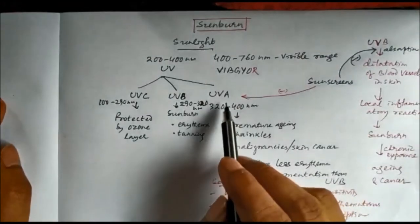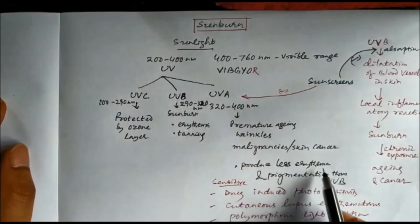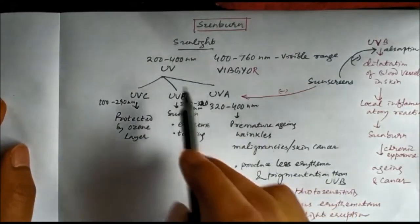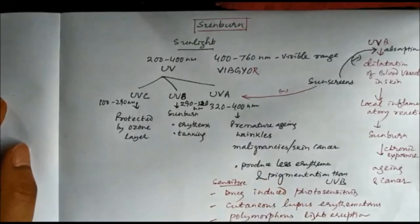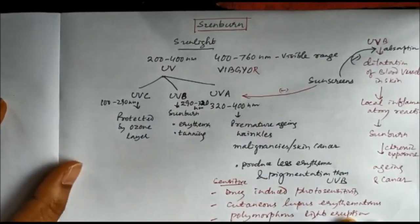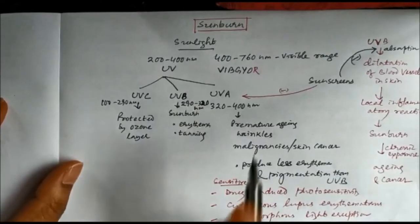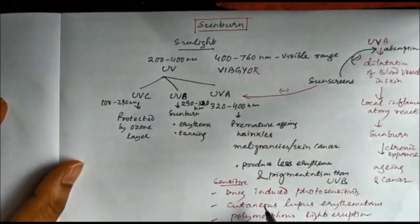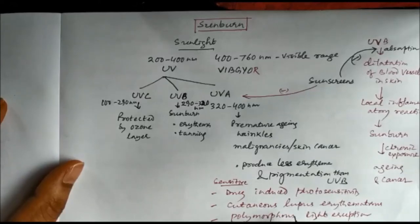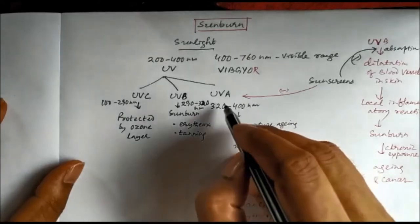Comparing UVA and UVB, there is less erythema and pigmentation with UVA compared to UVB. However, certain patients are sensitive to UVA: patients with drug-induced photosensitivity, patients with cutaneous lupus erythematosus, and patients with polymorphous light eruptions are very much prone to UVA.